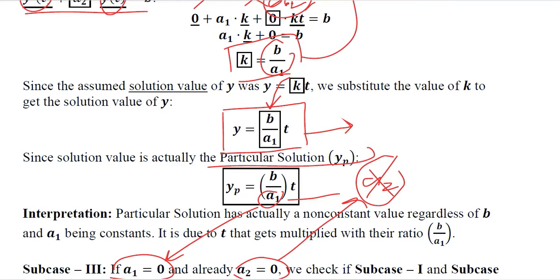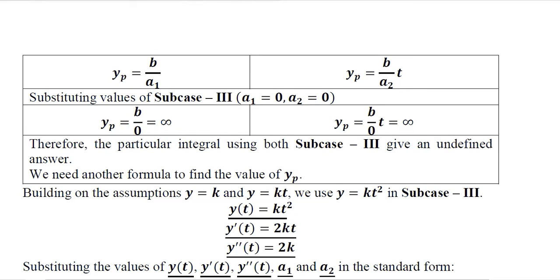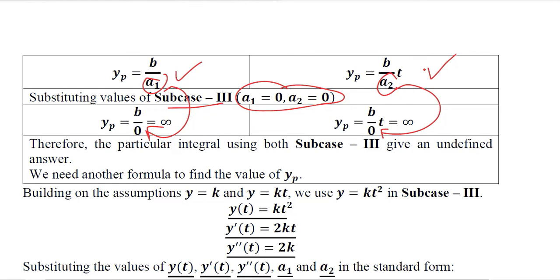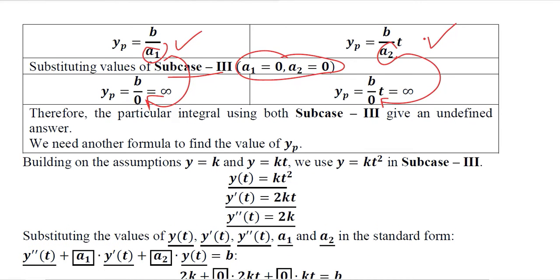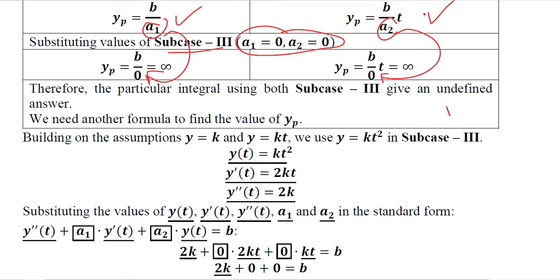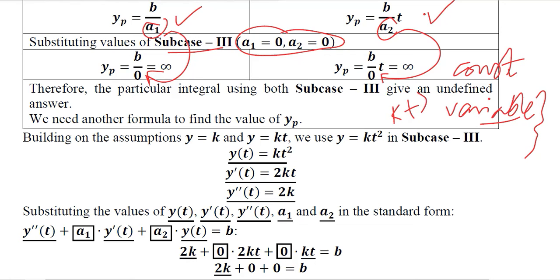Both formulas cannot be applied in subcase 3 because putting 0 in place of A1 and A2 makes the answers undefined. We have to develop another formula. Previously we used a constant in subcase 1 and the variable KT in subcase 2. Now we complicate it a bit further by experimenting with KT squared instead of KT, so the assumed particular solution is Y equals KT squared.